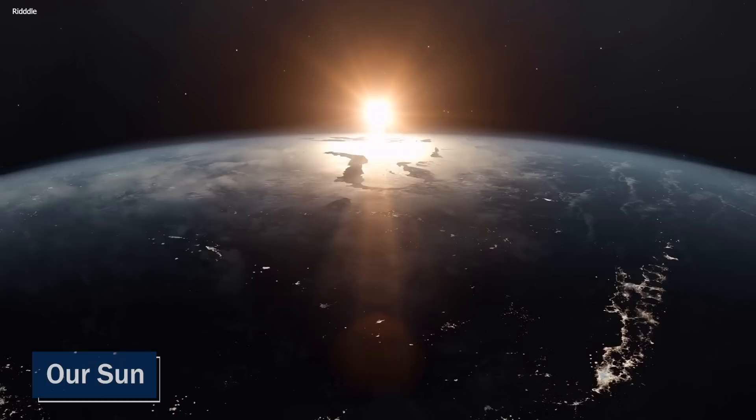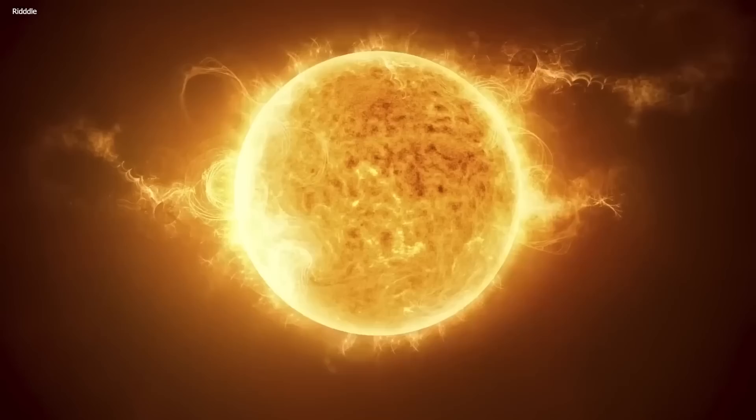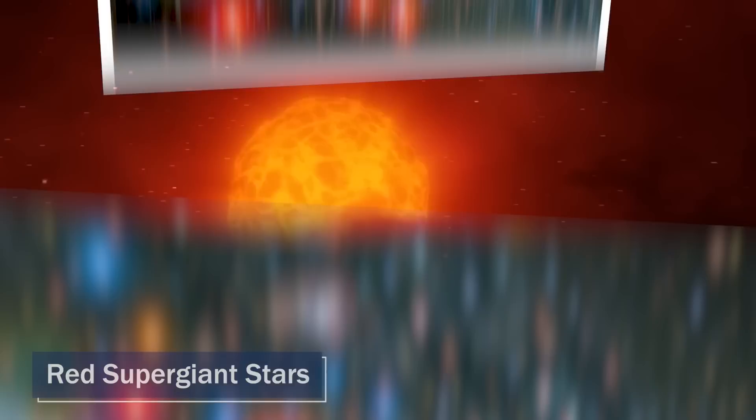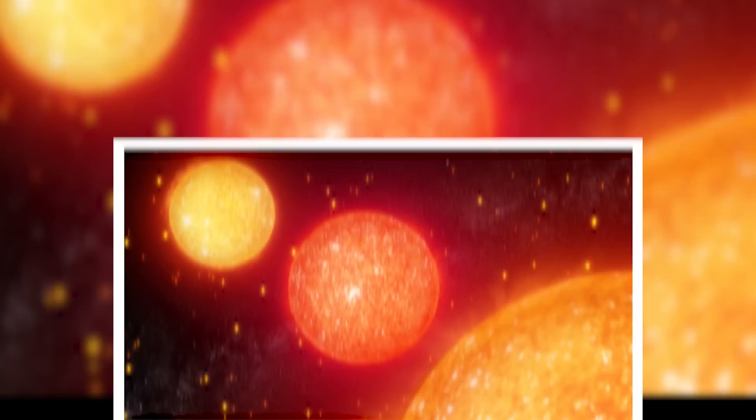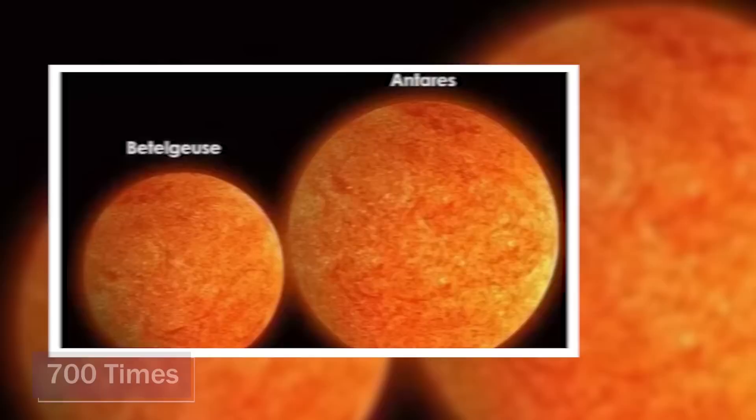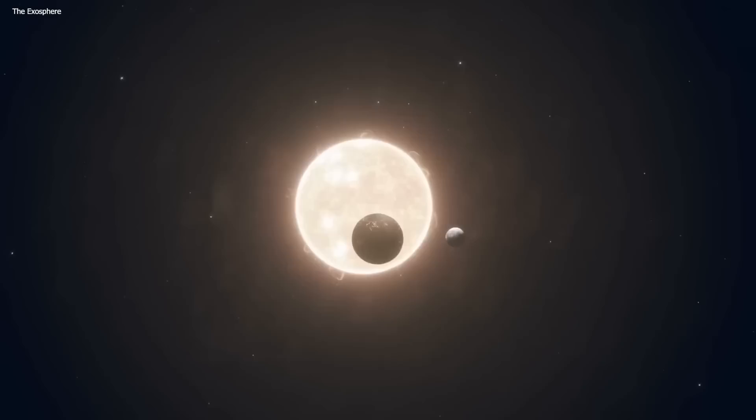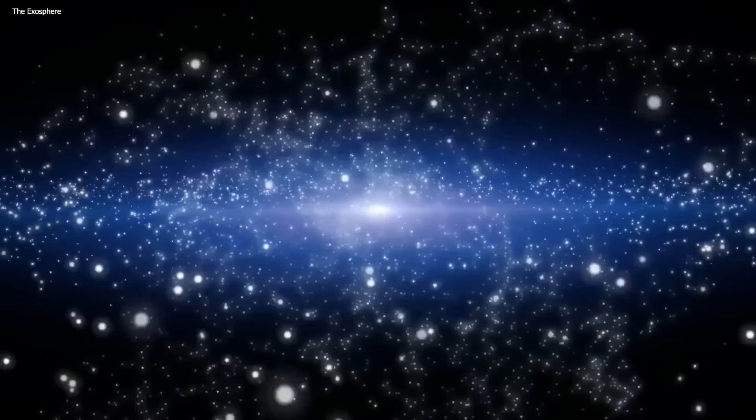To explain the difference, we're going to be using our sun as the point of comparison, because that's something we all know plenty about. While Betelgeuse, Antares, and Mu Kefi are all red supergiant stars, they each have their own unique properties and characteristics that set them apart from one another. One of the main differences between the three stars is their size. Betelgeuse, for example, has a radius of about 1,000 times that of the sun, while Antares has a radius of about 700 times that of the sun. Mu Kefi, on the other hand, is even larger, with a radius of about 1,650 times that of the sun.